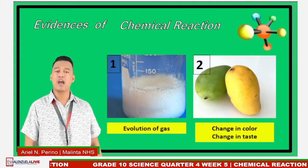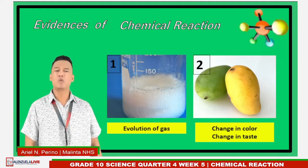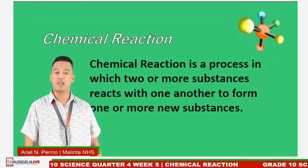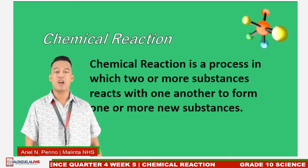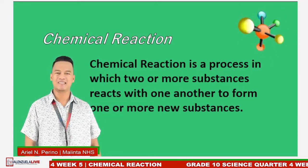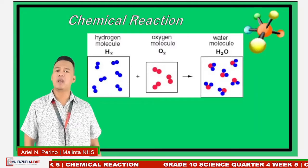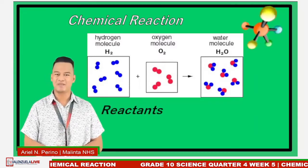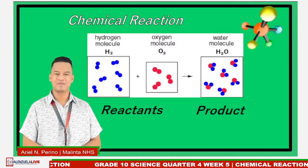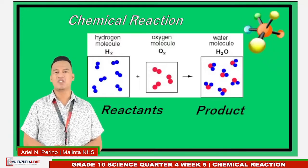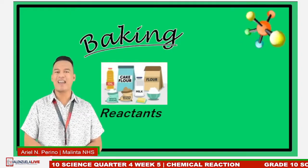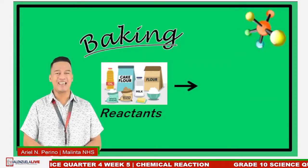Chemical reactions happen every day, everywhere. But what is a chemical reaction? A chemical reaction is a process in which two or more substances react with one another to form one or more new substances. Starting materials in chemical reactions are called reactants, while substances formed after the chemical reaction are called products. An example is baking: the ingredients like flour, sugar, and milk are the reactants, and a yummy cake is the product.